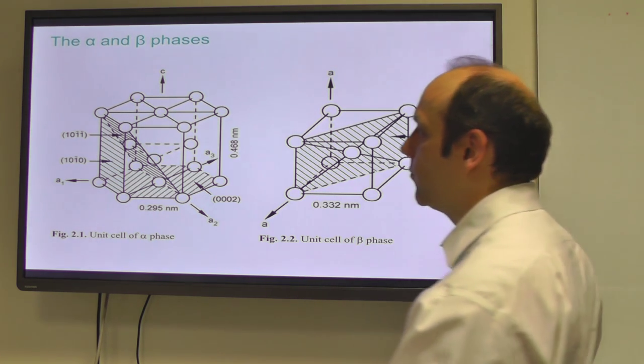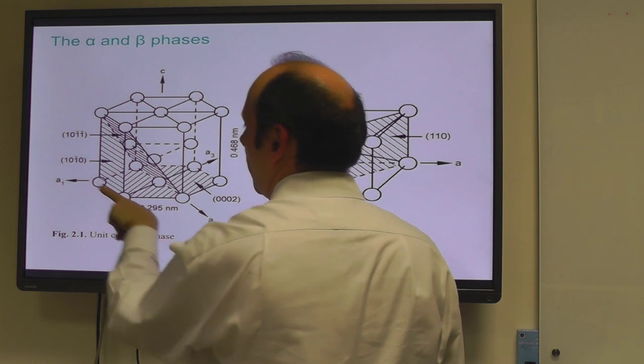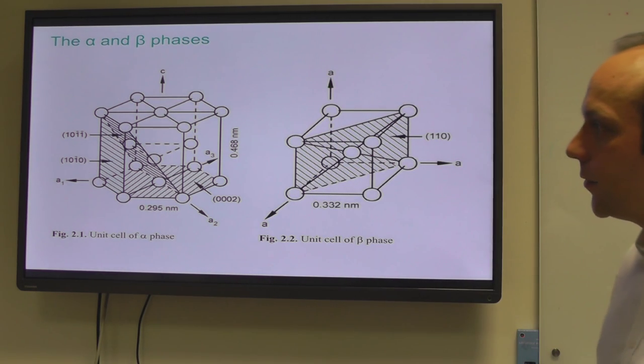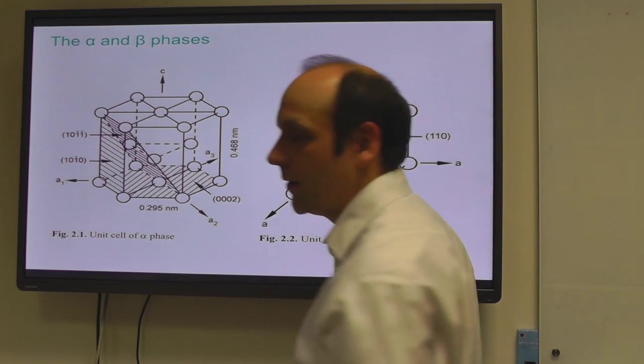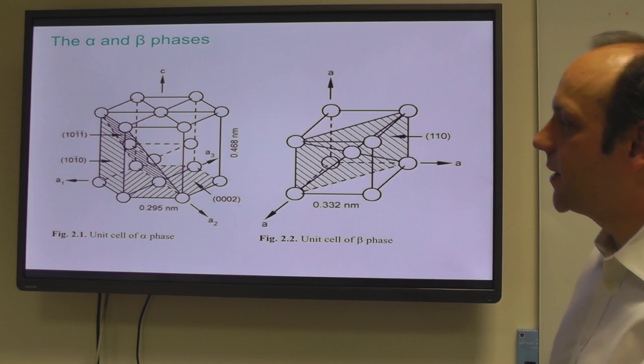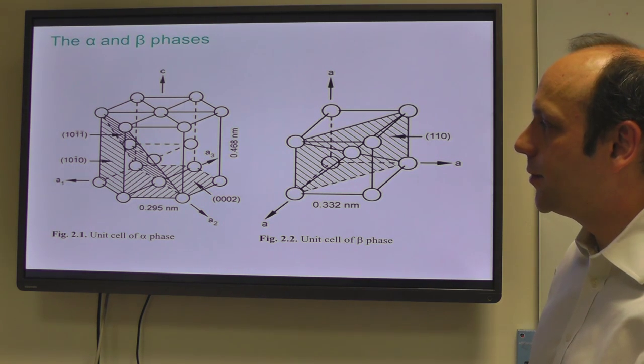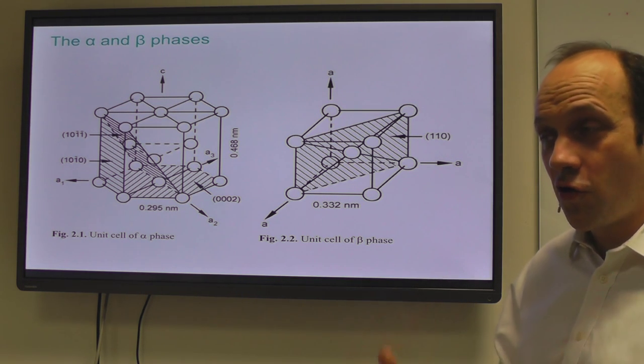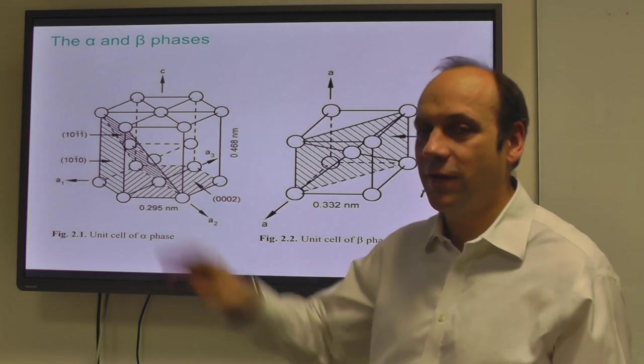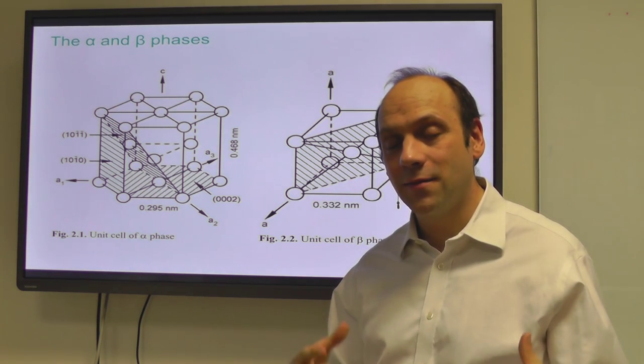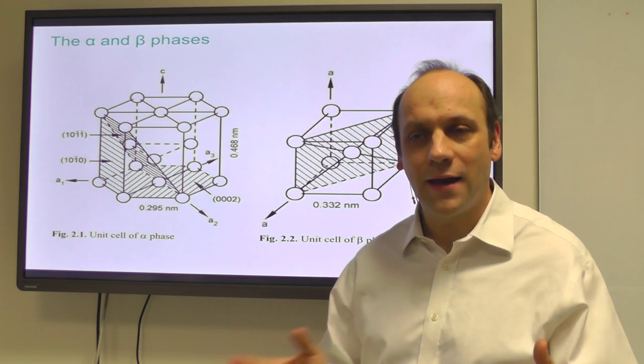In titanium, the most favorable slip is prism slip, slip on this prism plane, the 10-10, along the 11-20 direction. Whereas C plus A slip is a third 11-23, that is from here to here through the unit cell on a pyramidal plane. C-axis slip is stronger, but it does have available C-axis slip systems. So this alpha phase, although it is quite anisotropic plastically, has some plasticity. That is why we can use it compared to, say, zinc as a ductile metal.